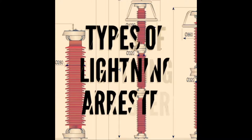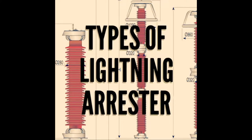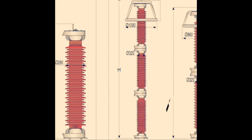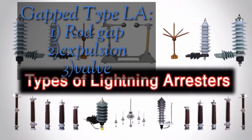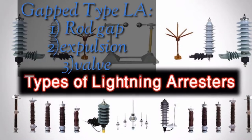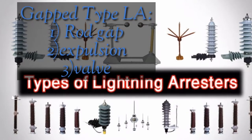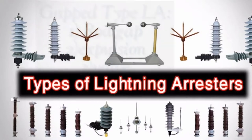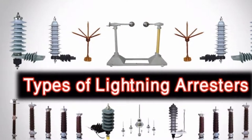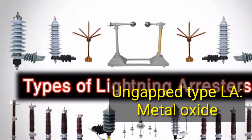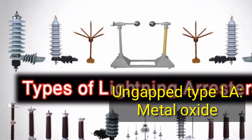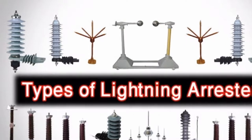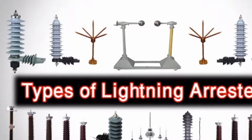Let's discuss the types of lightning arrestors or surge diverters. The first category is the gap type, which includes rod type and expulsion type. The valve type also falls under gap type. In the un-gapped type, only the metal oxide type lightning arrestor comes.